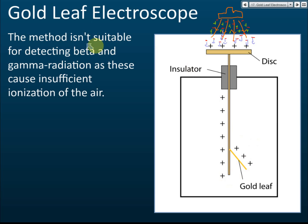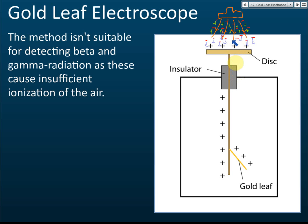To summarize: first, the gold leaf electroscope can be used to detect radioactive emissions. Second, it can only be used to detect alpha emissions — beta and gamma cannot be detected because their ionizing effects are too low. Third, the mechanism is that alpha particles ionize the air, the negative particles move to the electroscope, neutralize the charge, and the gold leaf closes.